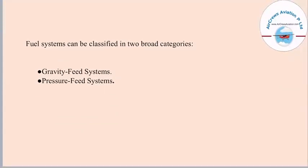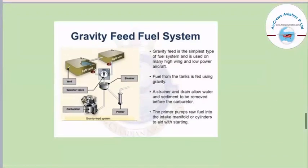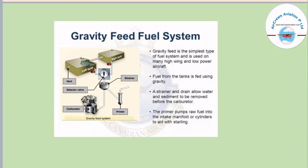Fuel systems can be classified into two broad categories: gravity feed systems and pressure feed systems. The gravity feed system is the simplest type and is used on many high-wing, low-power aircraft. Fuel from the tanks is fed using gravity. A strainer and a drain allow water and sediment to be removed before the carburetor. The primer pumps raw fuel into the intake manifold or cylinder to aid with starting.